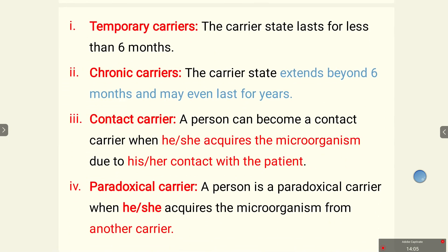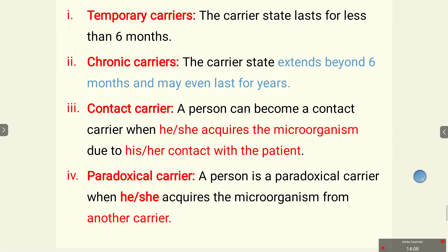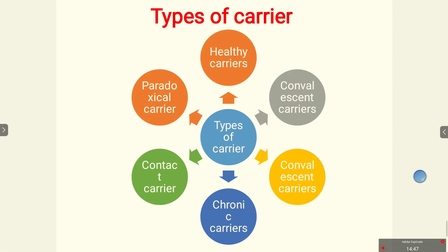Carriers can also be classified as temporary carriers — who carry pathogens for a short period, less than six months; chronic carriers — whose carrier state extends beyond six months, even for years; contact carriers — persons who acquire the microorganism through contact with a patient; and paradoxical carriers — persons who acquire the microorganism from another carrier.